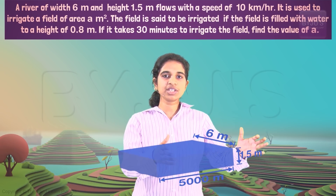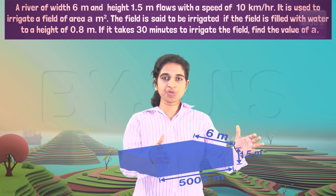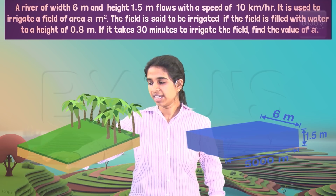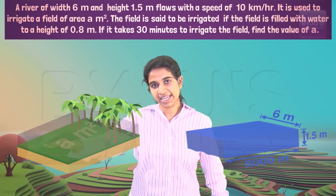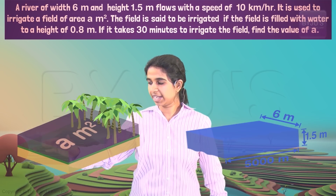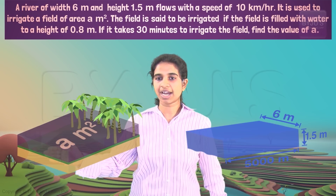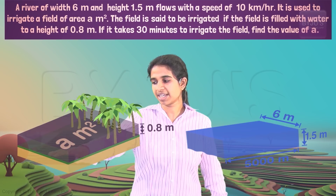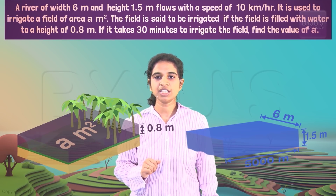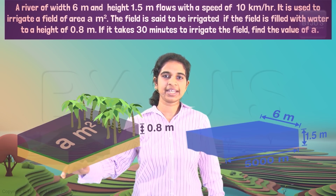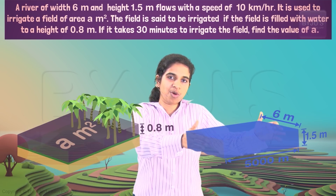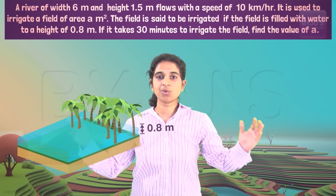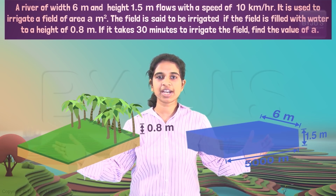We are using this water to irrigate a field — essentially filling another cuboid. The area of the field is A, and the field is said to be irrigated when the water in it is at a height of 0.8 meters. The field will be completely irrigated when the entire volume of river water is transferred to the field.